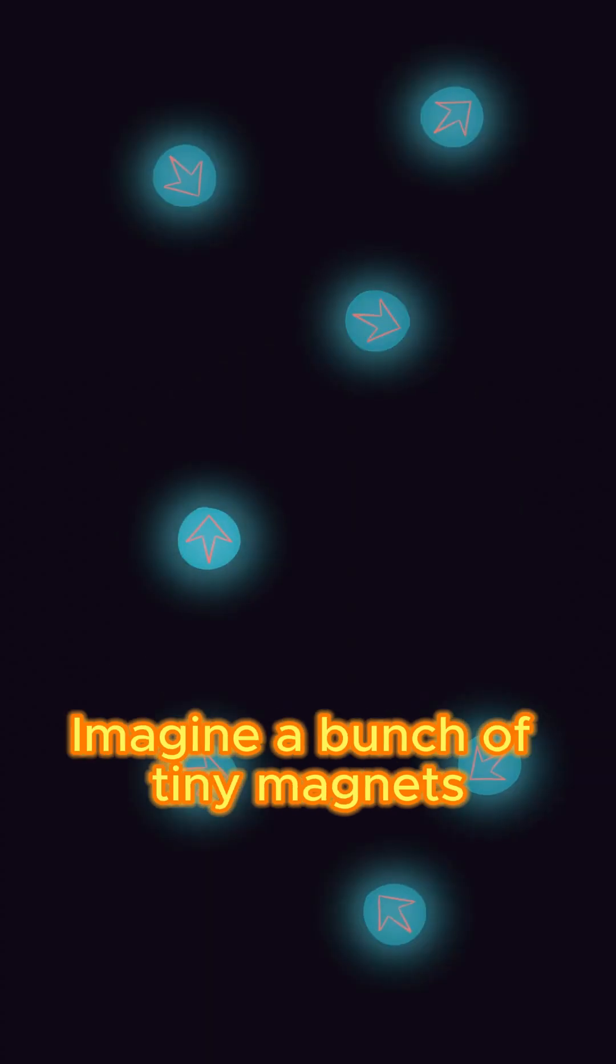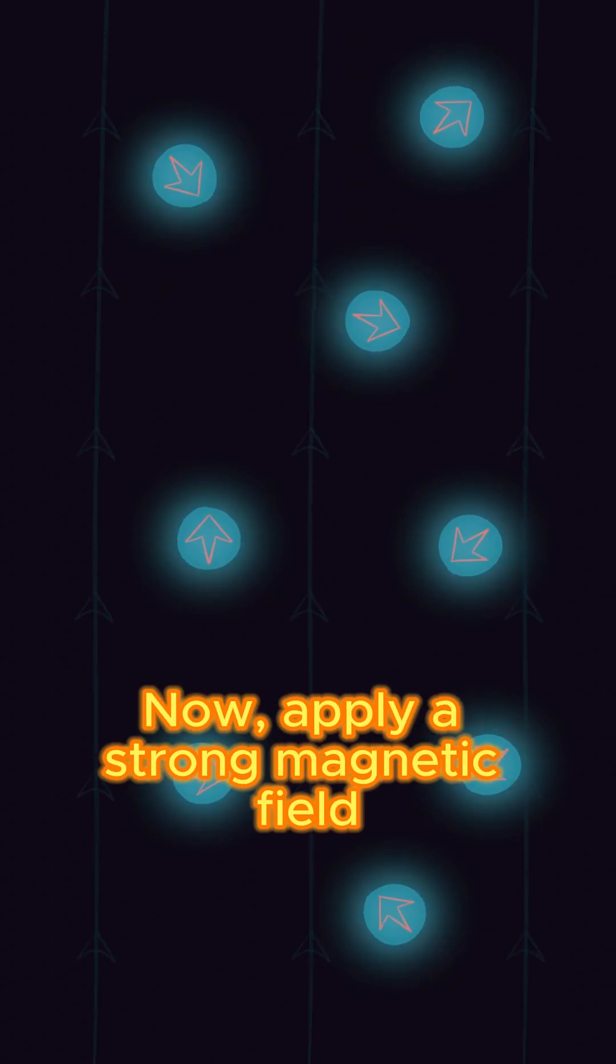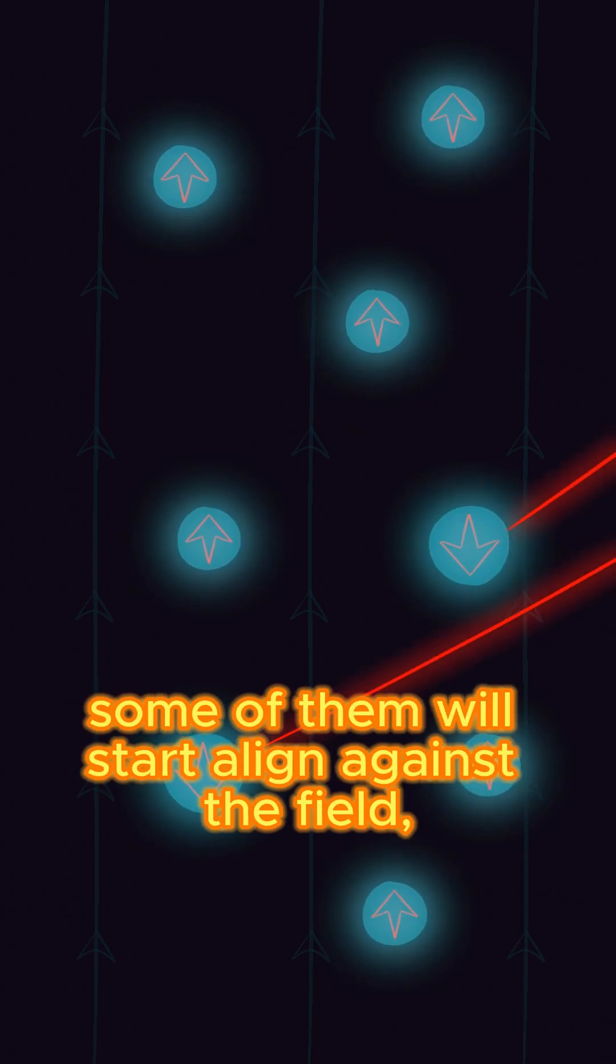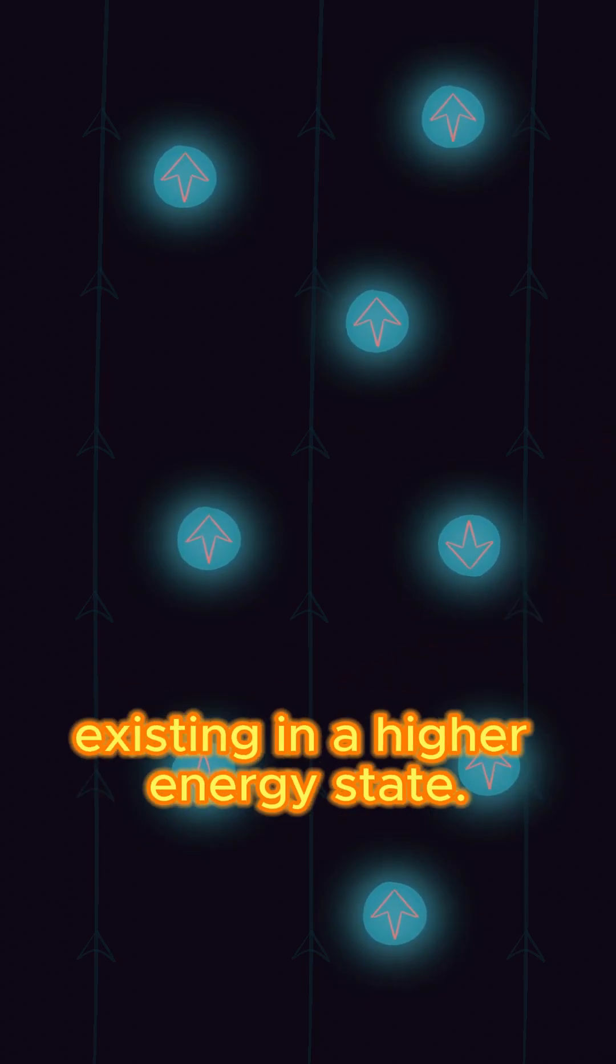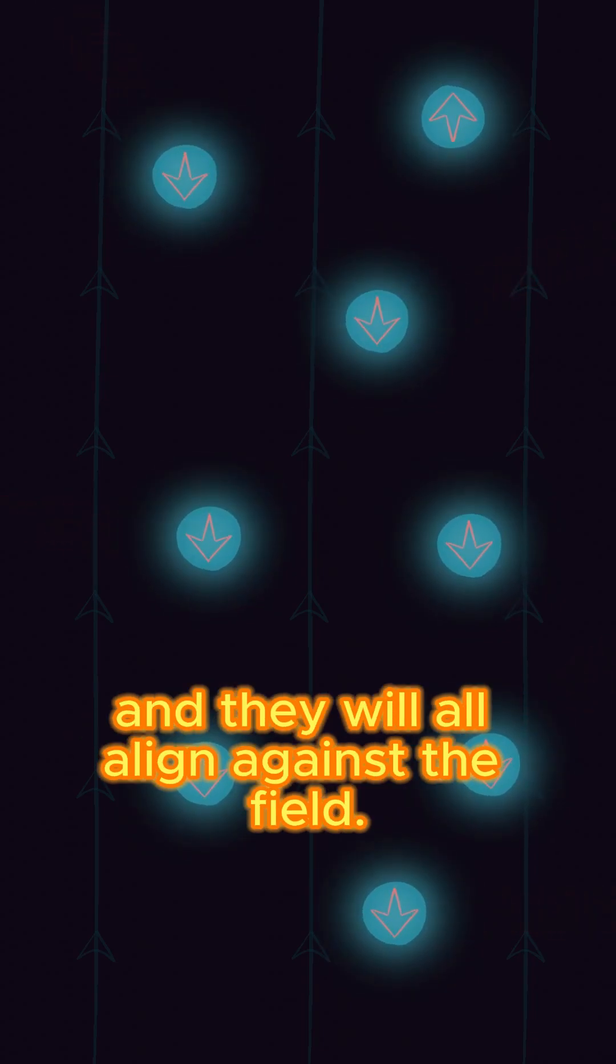Imagine a bunch of tiny magnets which all point in random directions. Now apply a strong magnetic field and they will all align with the field. If we give these magnets more energy, some of them will start to align against the field, existing in a higher energy state. Give it even more energy and they will all align against the field.